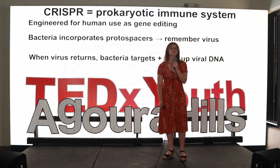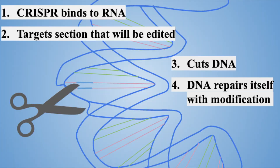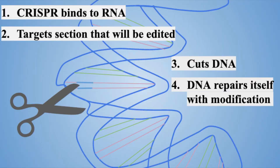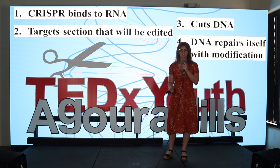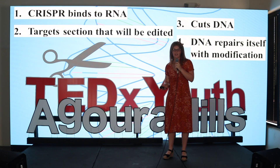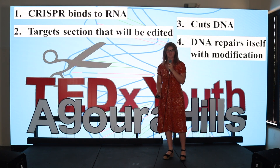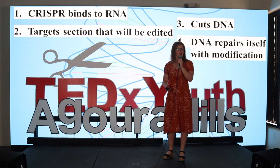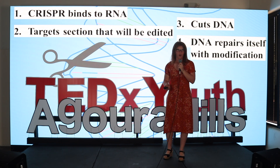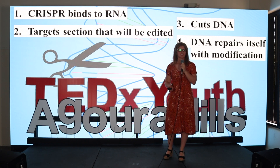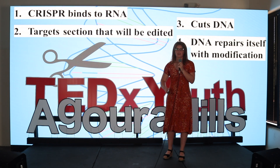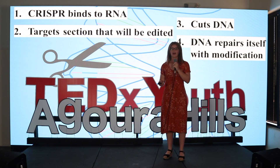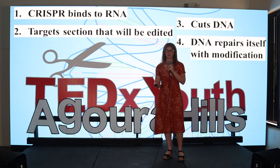After entering the body through stem cells, a viral vector, or other means, CRISPR binds to the RNA. RNA controls protein synthesis and carries instructions from human DNA. After this, the CRISPR-RNA complex targets the specific section in the DNA that will be edited, and then the DNA is cut at these sections. Then the modifications are introduced and the DNA repairs itself with these modifications.